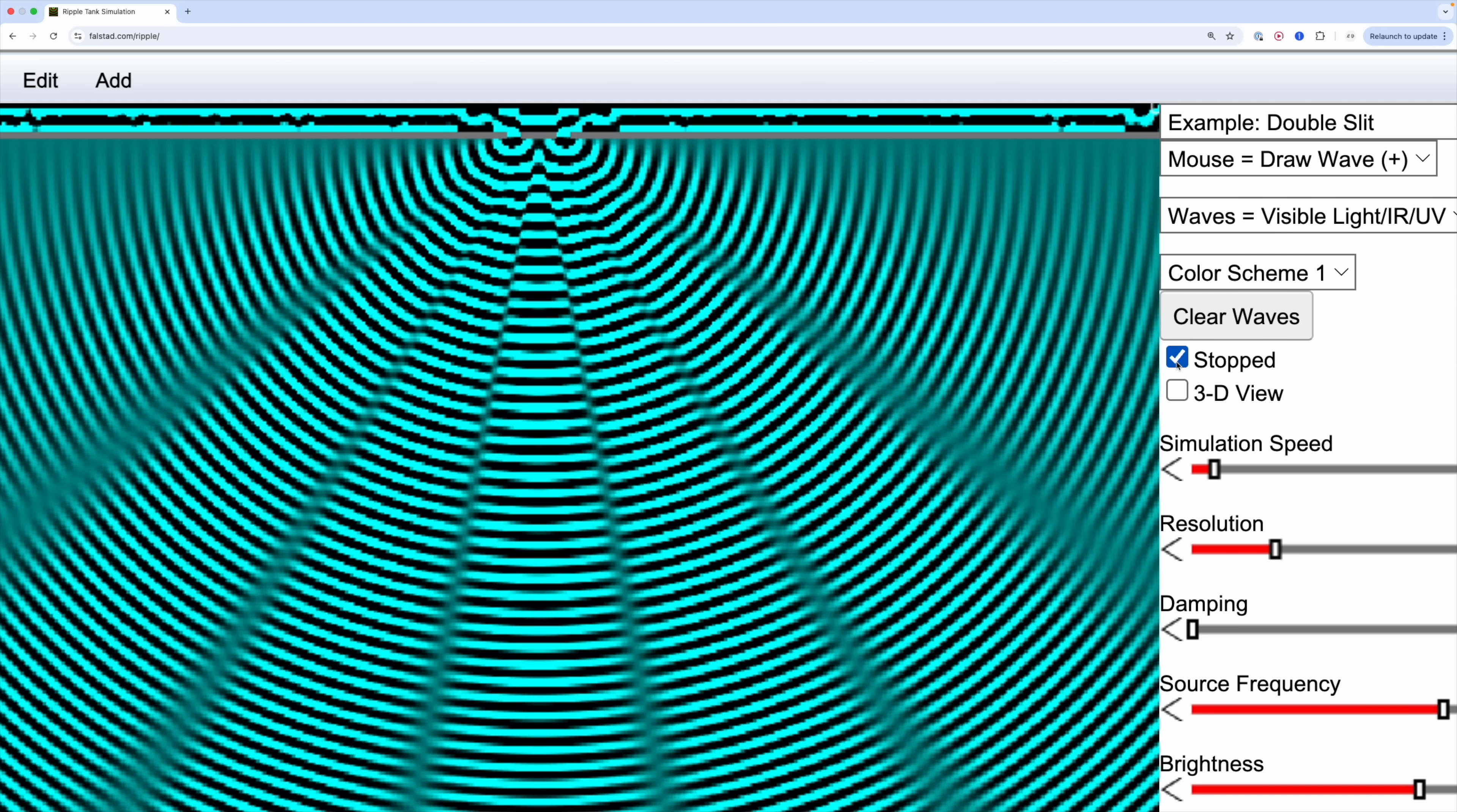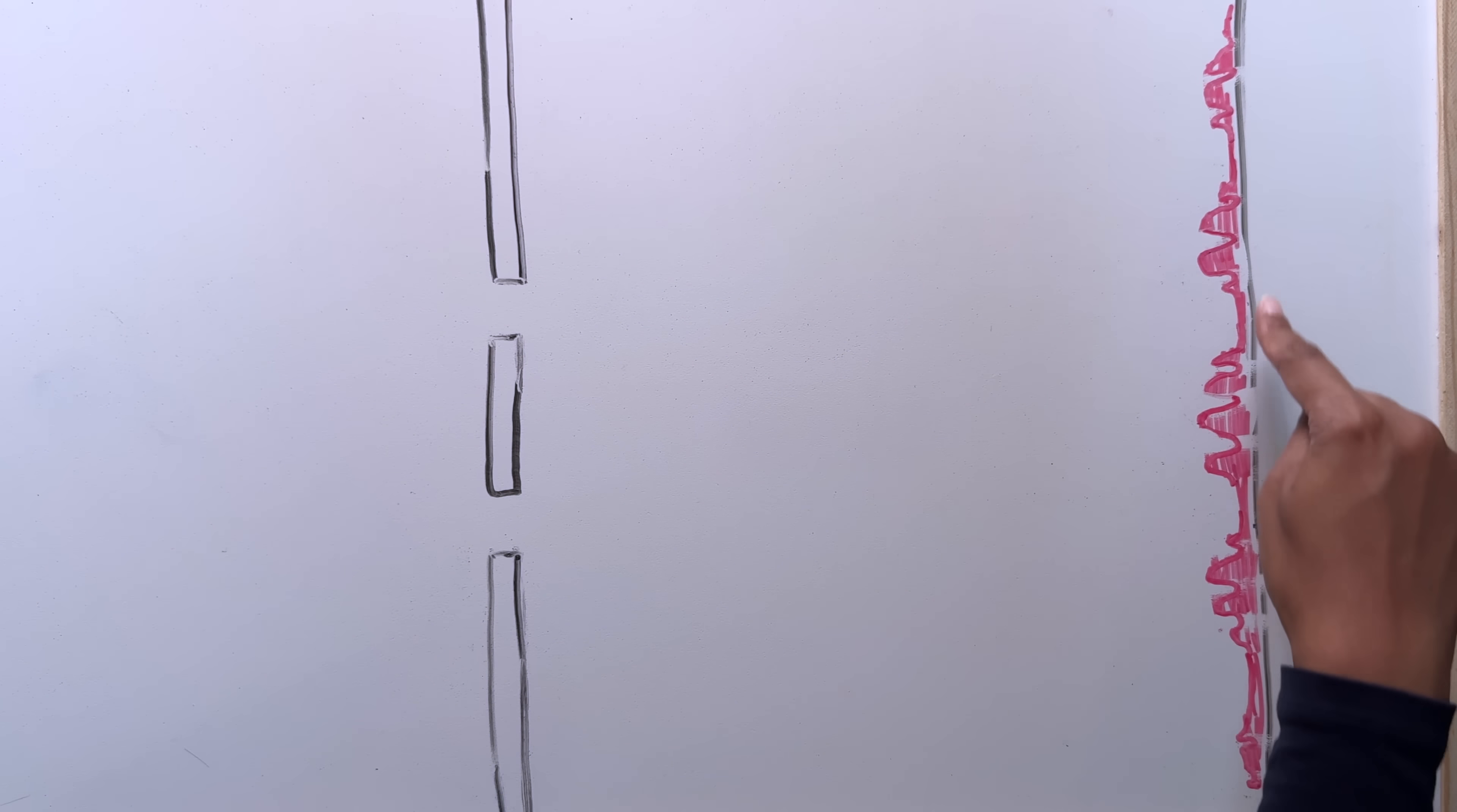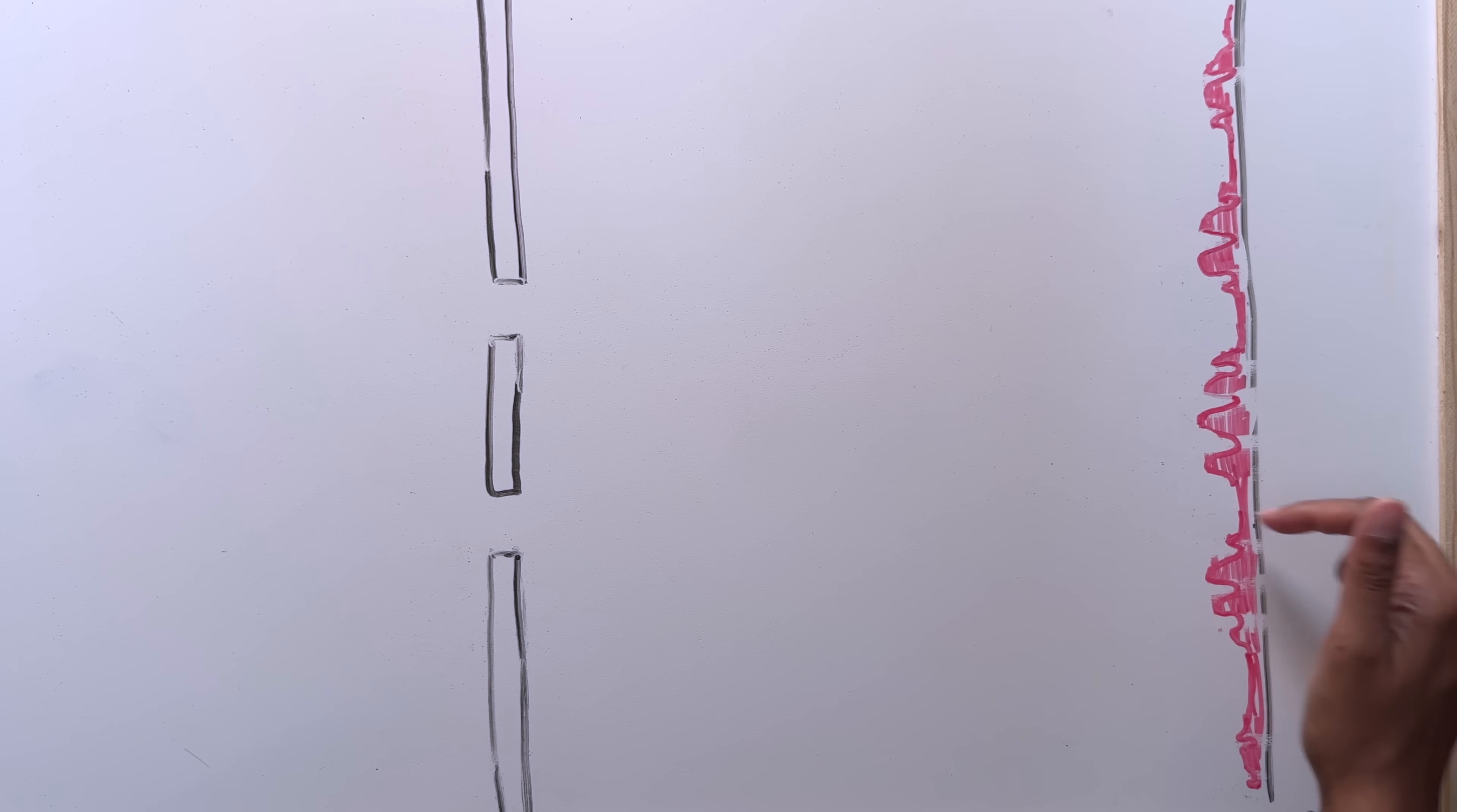And as we saw in that simulation, what you'd expect for a wave is that it hits this back wall in this very funny pattern. There are some spots like this one where it's very intense, and then there are some spots like this where it's not intense at all. And there are these little bands of intensity and no intensity.